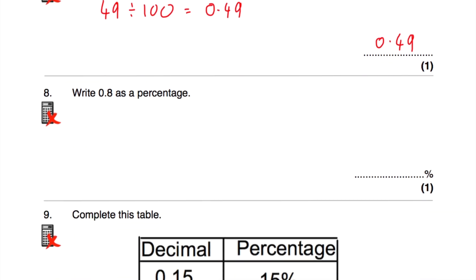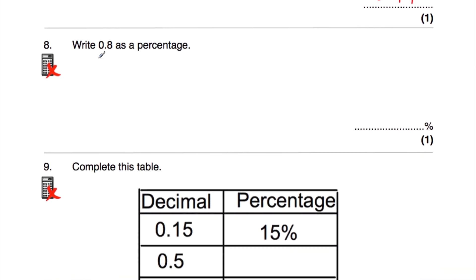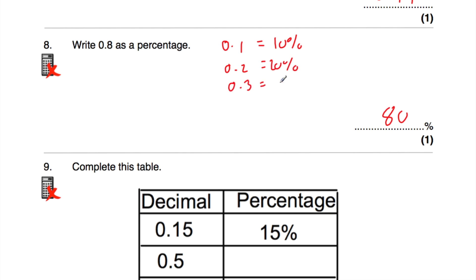Question number eight is to write 0.8 as a percentage, so 0.8 as a percentage would be 80%. It's really useful to know that 0.1 is 10%, 0.2 is 20%, 0.3 is 30%, and so on, and that 0.8 would be 80%. We could also take 0.8 and times it by 100, moving the digits two columns to the left. The 8 moves into the units and then into the tens, giving 80, so the answer is 80%.